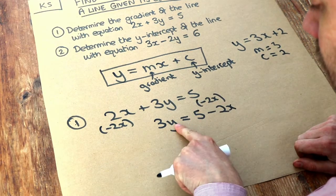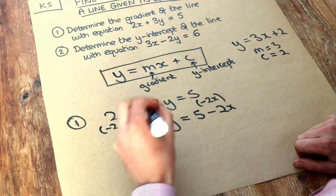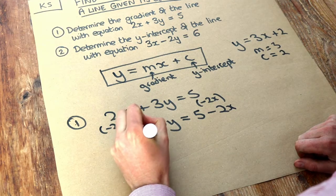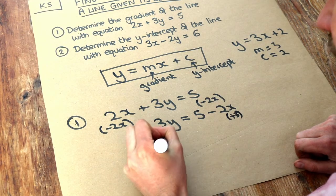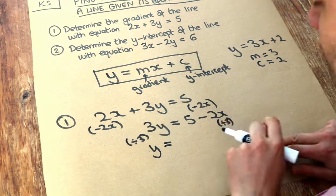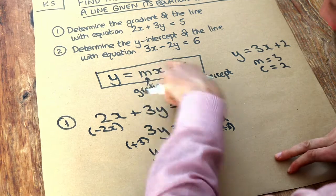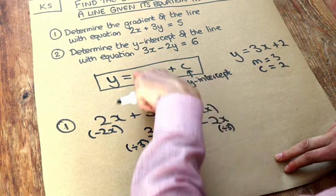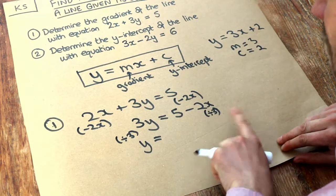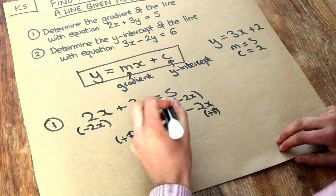Now we're going to get y on its own. Y has been multiplied by 3, so to get rid of the times by 3, we divide both sides by 3. That gives us y equals... You might be tempted to put this whole thing over 3, but then it wouldn't be in this form. So we're going to divide each individual term by 3.